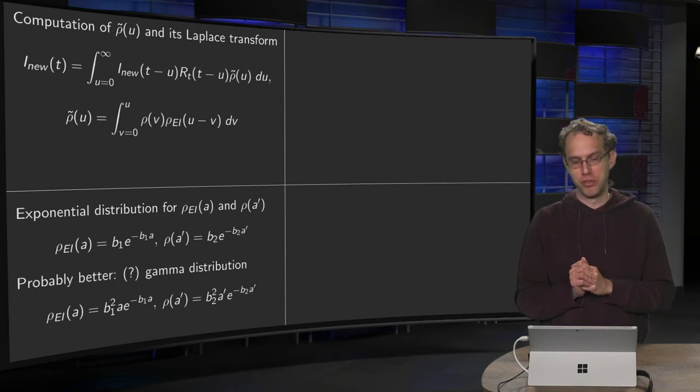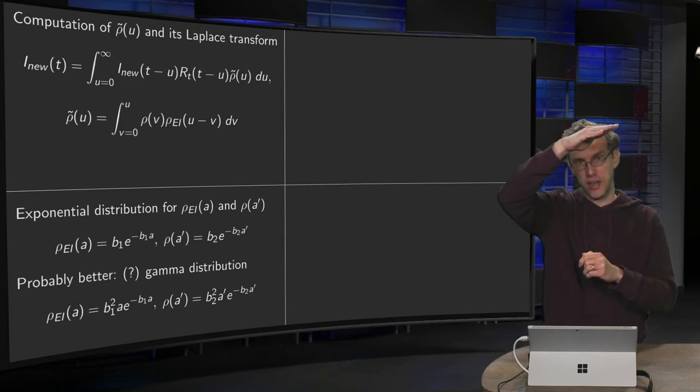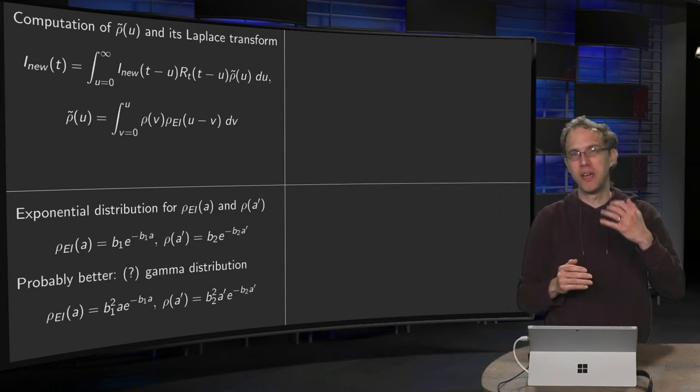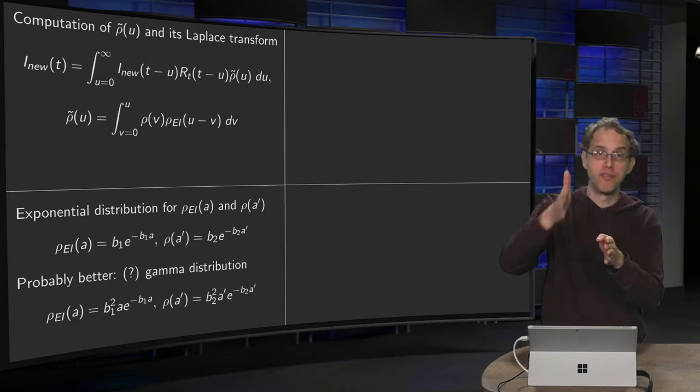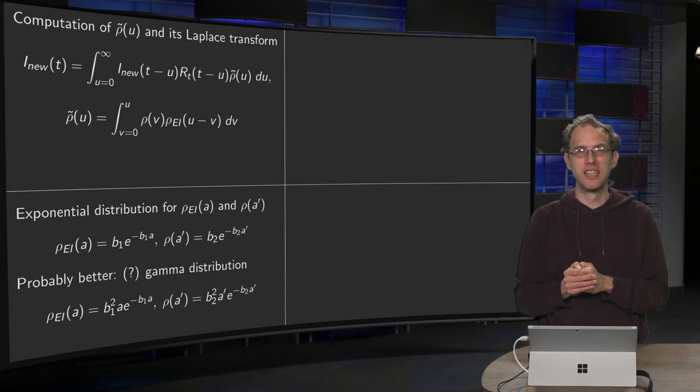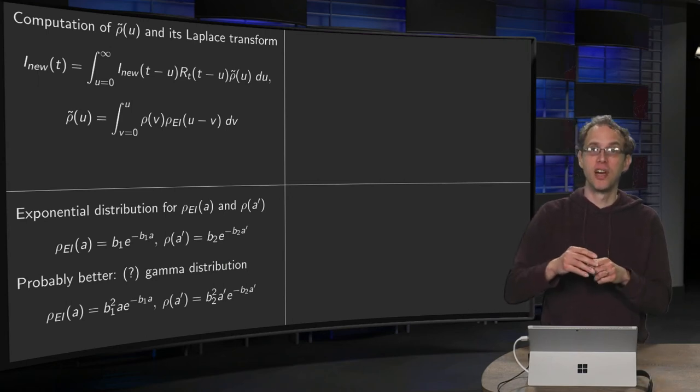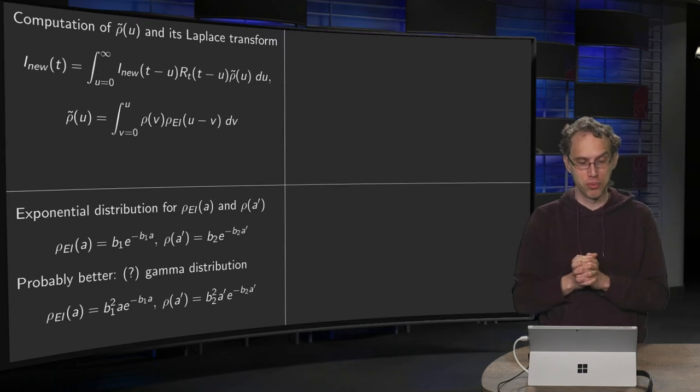In the literature, usually exponential distributions are used for ρEi and ρA, and that is a bit odd. They are starting at highest point and then decreasing. So it basically means that the chance of going from exposed to infectious is biggest right away after the infection takes place. And that for me seems a bit counterintuitive. I would rather expect some distribution which is first low, then has some maximum, and then goes back, like some gamma type of distribution.